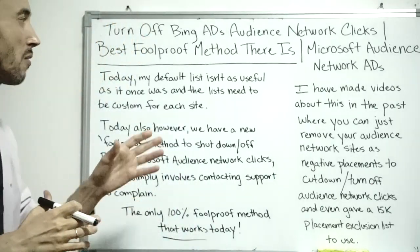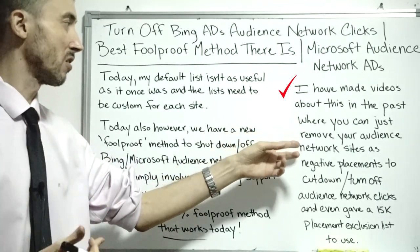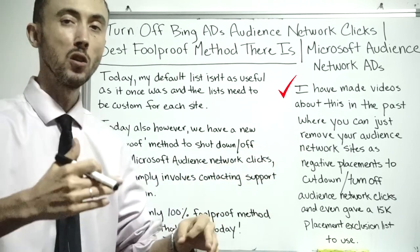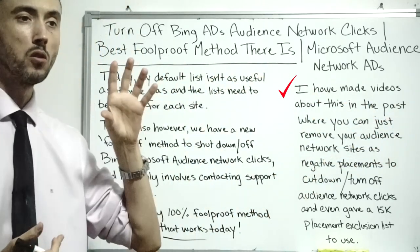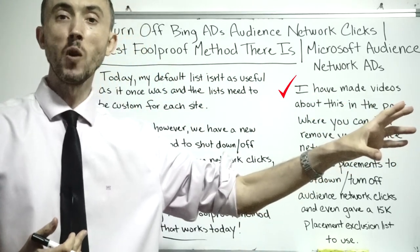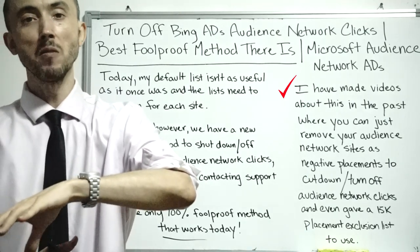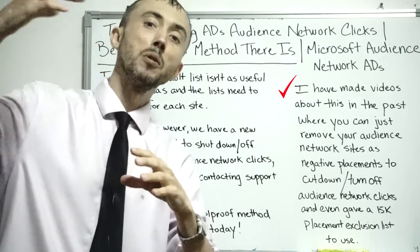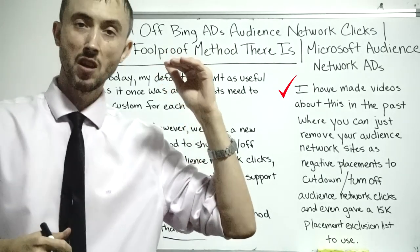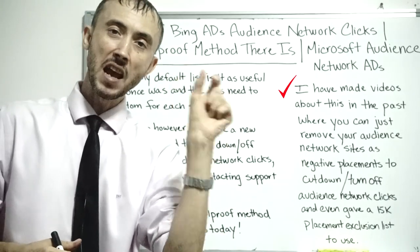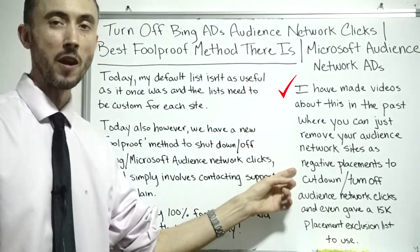I've made videos in the past about getting rid of Bing/Microsoft audience network clicks by adding placement exclusions. It's been an ongoing game of whack-a-mole. It used to be you could put a negative 100% bid adjustment on audience network clicks, then they got rid of that. Then you could add negative placement targets on your campaign to get rid of the audience network clicks, but now that's no longer easy to do either.